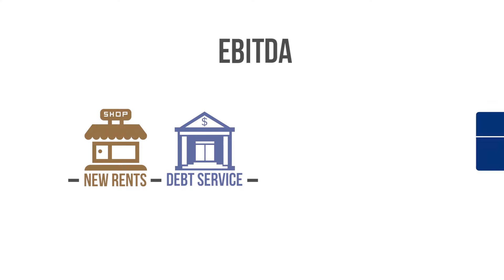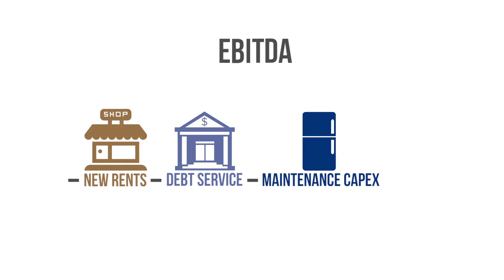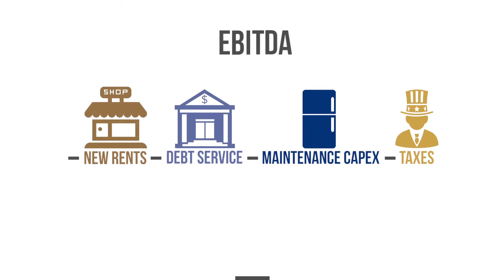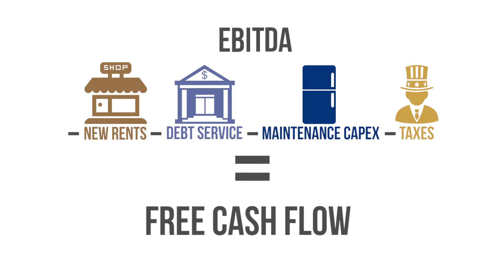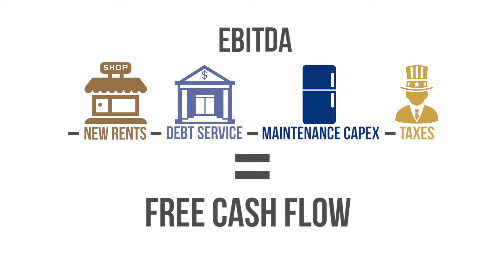Next, subtract the amount that you expect to pay for normalized annual maintenance capital expenditures. And lastly, subtract the taxes that you might owe from the earnings of the business. What's left over is free cash flow, and it goes to you.